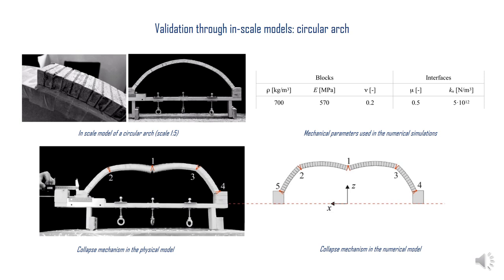The proposed approach has been validated through two experimental benchmarks, which are in-scale models of an arch and a cross-vault. The arch model is built with wood blocks and mortar joints. The table summarises the mechanical properties of the blocks and interfaces; in particular, Kn has been calibrated through a convergence analysis. The arch was subjected to opening of one abutment until collapse. The numerical imposed displacement at collapse equals 12.82 mm, which is 6.7% lower than the one registered experimentally.